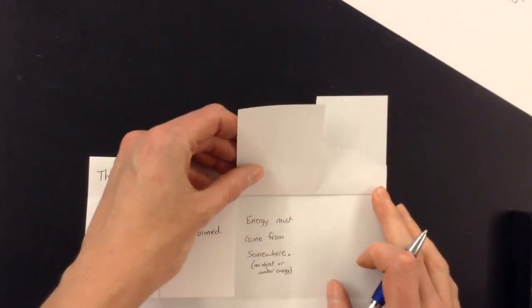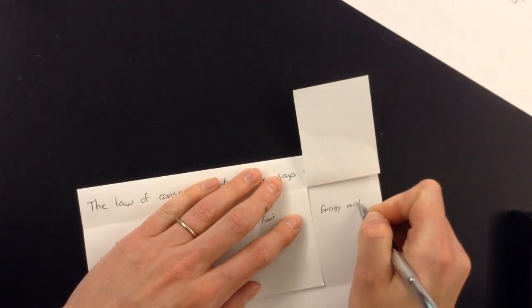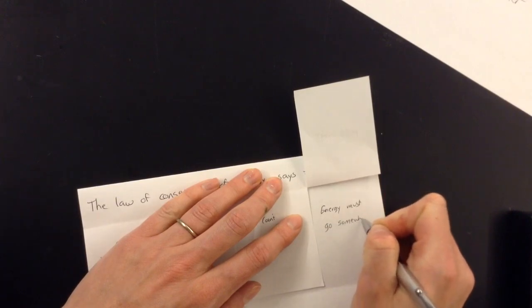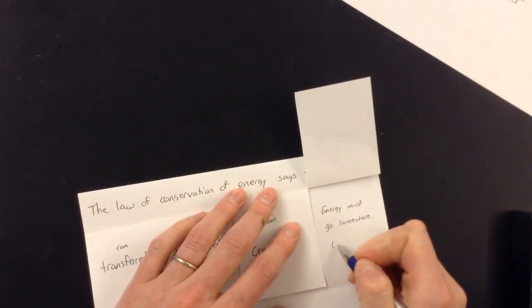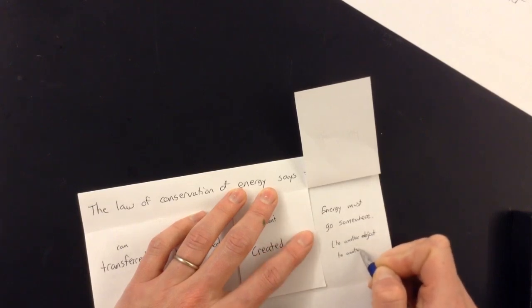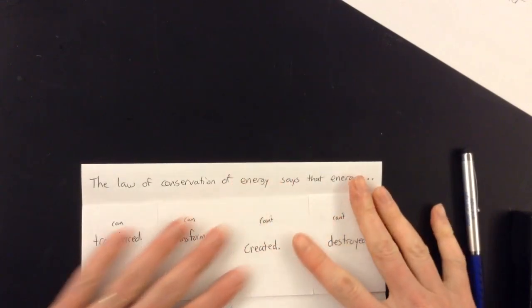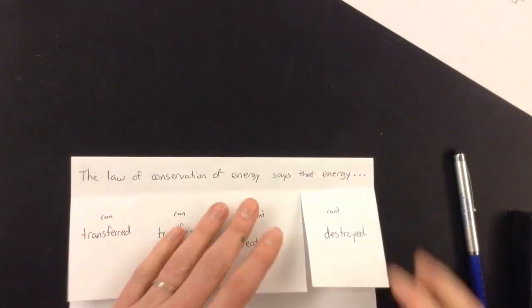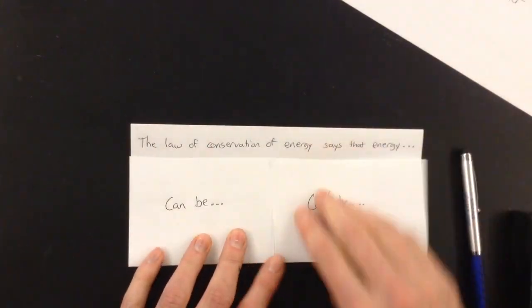Now, you can't destroy it. Same idea. Energy must go somewhere. So if you find that you have less energy than you were expecting, that means it's gone somewhere. Maybe it went to another object. Or maybe it went to another type of energy. It's still there. You didn't destroy it. It's not gone. Because you can't destroy it. But it's somewhere else. It went somewhere else. So energy comes from somewhere. Energy goes somewhere. You can't create it. You can't destroy it. So now you know what you can do and what you can't do with energy.